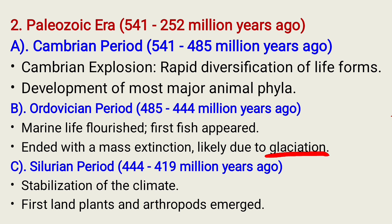The third Paleozoic Period is the Silurian Period, commonly known with the age of 444 up to 419 million years ago. Key events include the stabilization of climate and the emergence of the first land plants and arthropods.